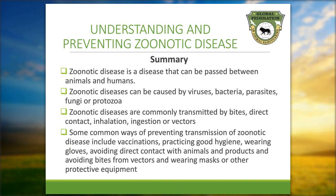In summary, zoonotic disease is a disease that can be passed between animals and humans. Zoonotic diseases can be caused by viruses, bacteria, parasites, fungi, or protozoa. Zoonotic diseases are commonly transmitted by bites, direct contact, inhalation, ingestion, or vectors. Some common ways of preventing transmission of zoonotic disease include vaccination, practicing good hygiene, wearing gloves, avoiding direct contact with animals and products, avoiding bites from vectors, and wearing gloves, masks, or other protective equipment.